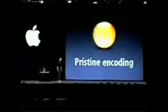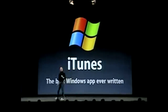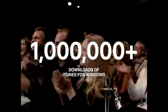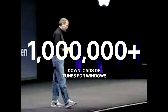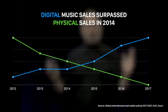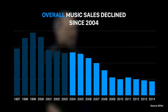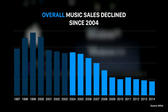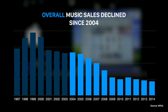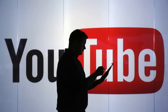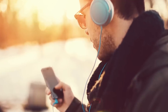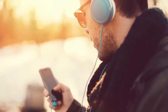iTunes was widely used among Mac users, but it didn't explode in popularity until it was released for Windows in October 2003. In just three and a half days after its release, iTunes for Windows was downloaded over a million times and secured iTunes' position as the number one digital music marketplace in the world. Digital music sales eventually exceeded CDs, but overall music sales began to decline in 2004 due to one factor in particular: the shift from digital music purchases to streaming services like Pandora and YouTube, who offered free music streaming with ads that could be removed with a monthly subscription.